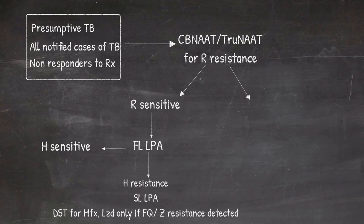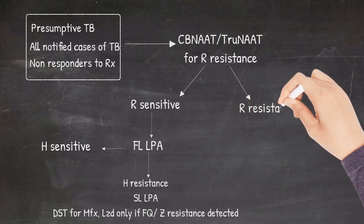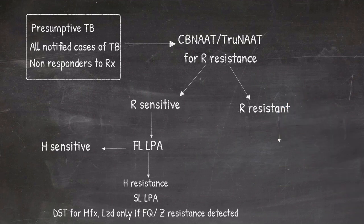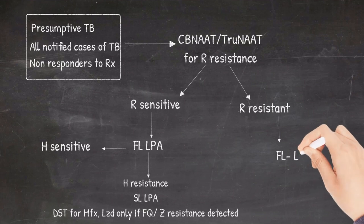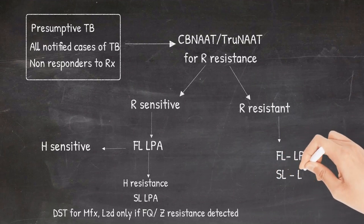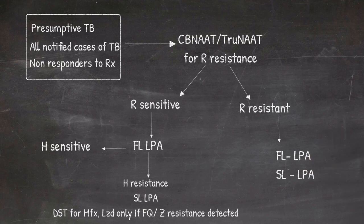Now we look into the second scenario. If rifampicin resistance is detected, then line probe assay is done to rule out resistance to INH and pyrazinamide and other second line agents. If resistance to INH is detected, it is managed as multi-drug resistant tuberculosis. If there is additional resistance to second line agents, then it is managed as extensive drug resistant TB.